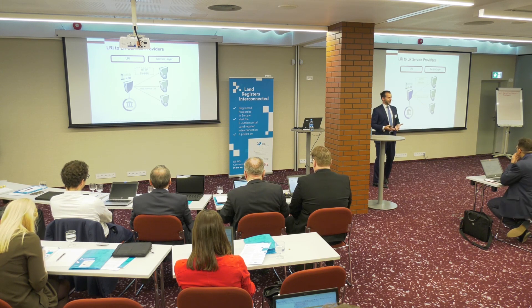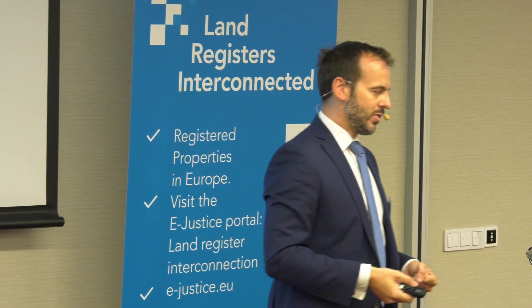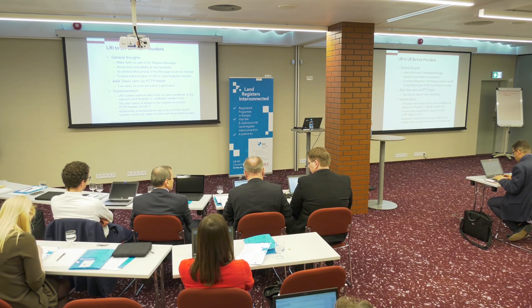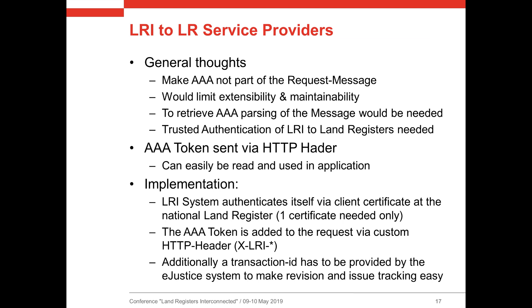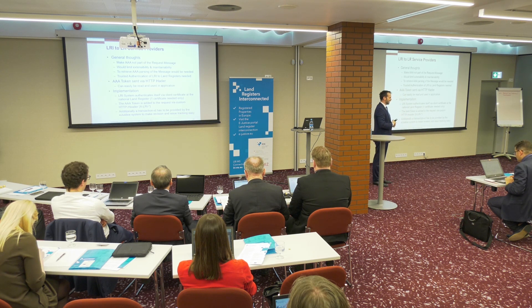Once you're logged in at the LRI system and it has all authentication information, when a web service call is made for queries you configure in your masks, it adds the token as an HTTP header — additional information on top of the request. We do it this way because we don't want to make authentication part of the actual message. Imagine a letter: if the information is inside, you have to open it every time to read it. By writing it on the outside, you don't need to open the letter. This is important for extensibility and maintainability — something I've seen matter over 15 years.